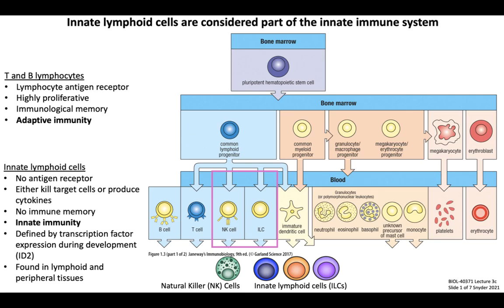These two lymphocyte populations are what make up the adaptive immune system. In contrast, innate lymphoid cells lack any sort of antigen receptor expression. Instead, they serve to amplify innate immune signals, usually cytokines, that are produced by things like macrophages, and in turn produce additional cytokines or cytotoxic effector molecules. They lack the ability to form long-term immunological memory, and due to their function, are truly considered part of the innate immune system.